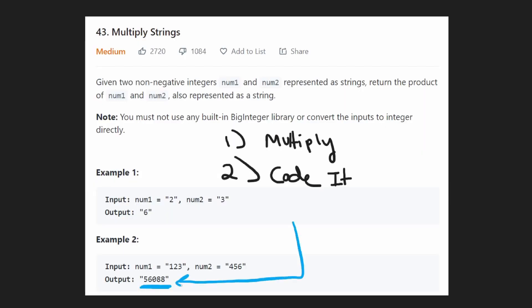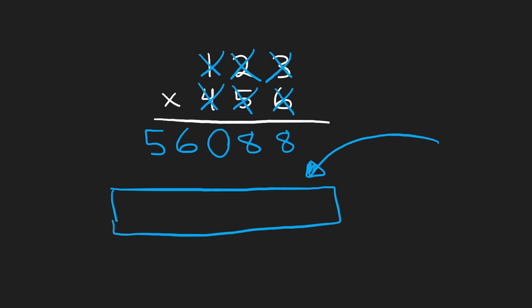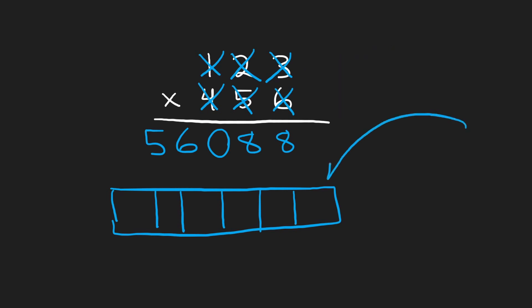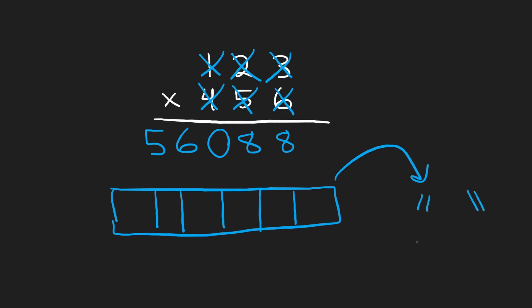That matches exactly the expected output. The way I ran through it is similar to how we'll code this. We're going to pre-allocate the result array with length equal to len(num1) + len(num2). We'll build the output as an integer array rather than a string array because it's easier — converting characters to integers and back. Then at the end we convert the array to a string. We'll iterate through both input strings in reverse order.